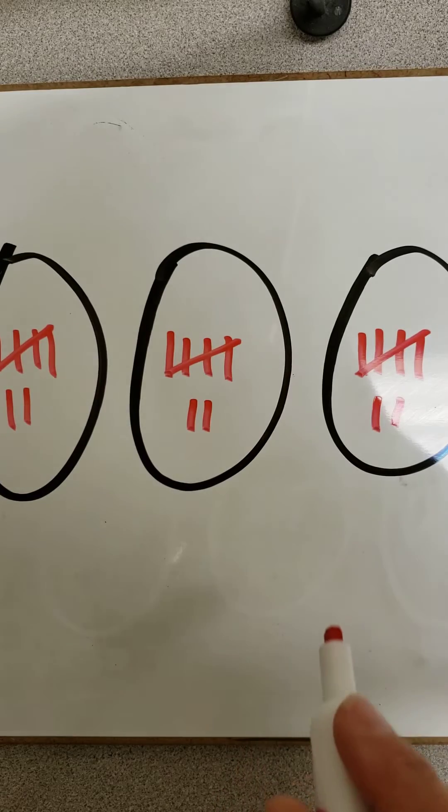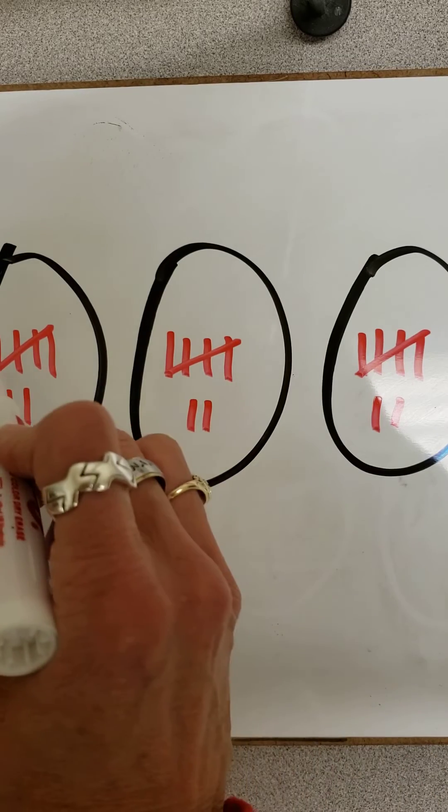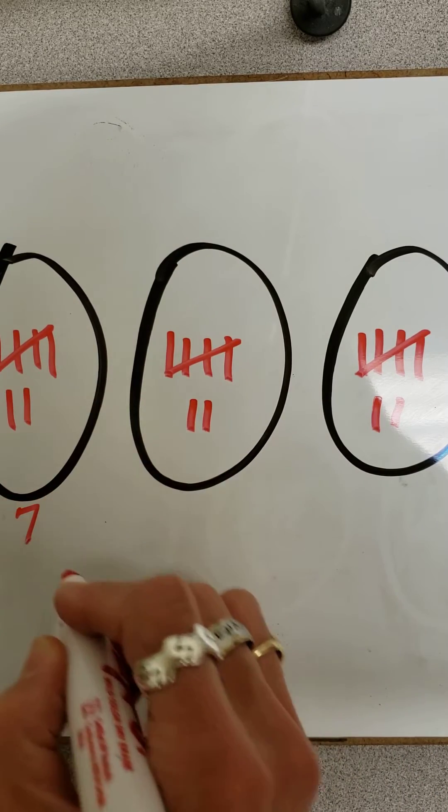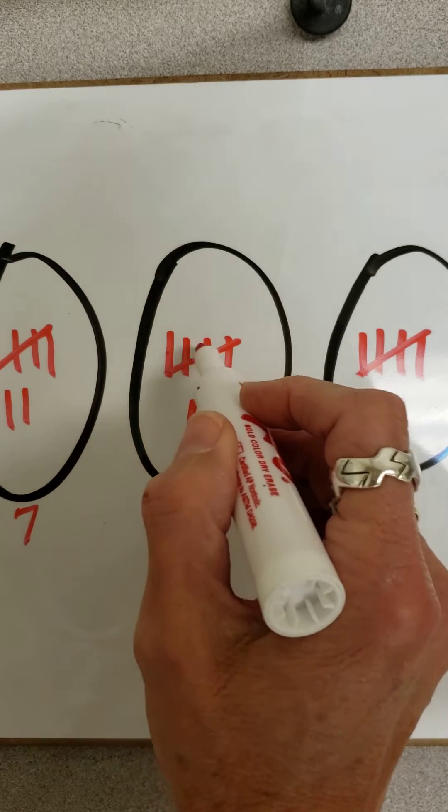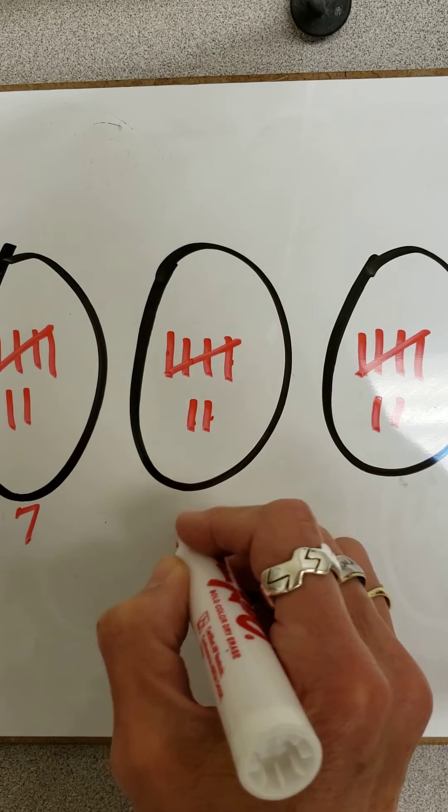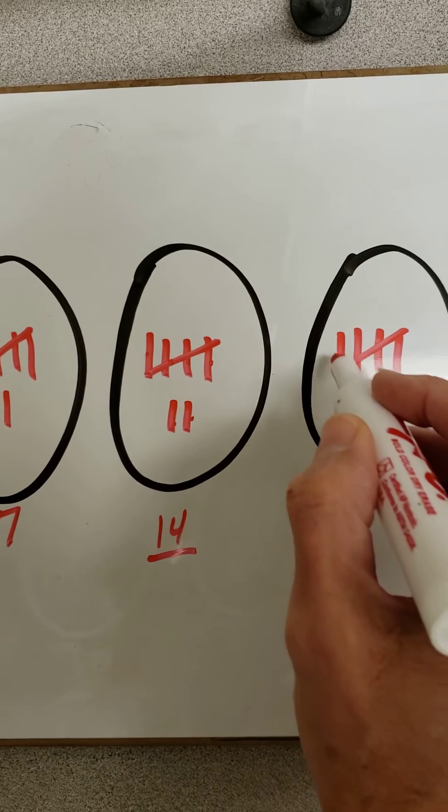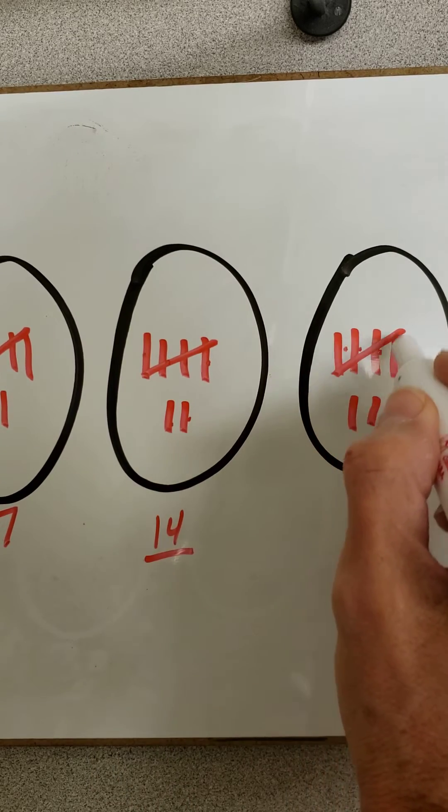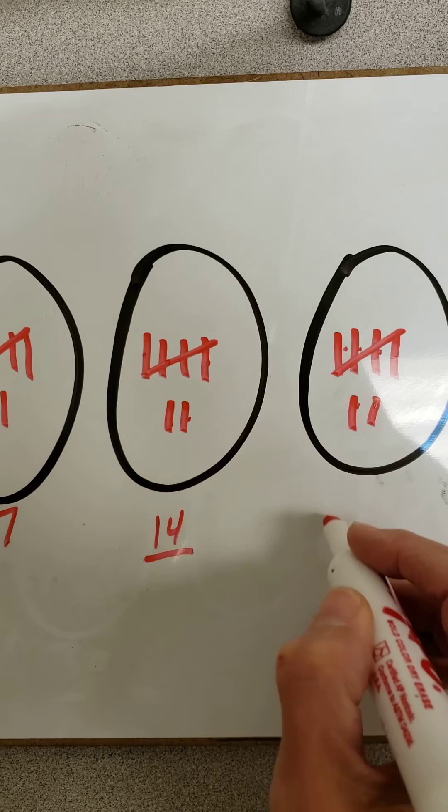Alright, I have 3 groups of 7 so let's count them up. This was a group of 7 here. And then 8, 9, 10, 11, 12, 13, 14. So I have 14, 15, 16, 17, 18, 19, 20, 21.